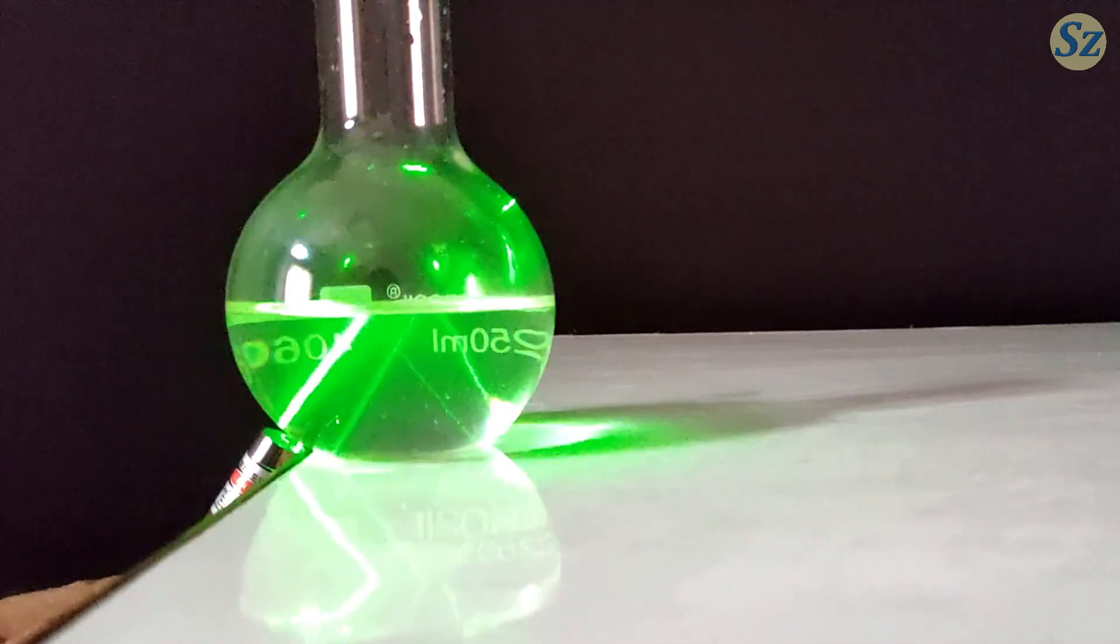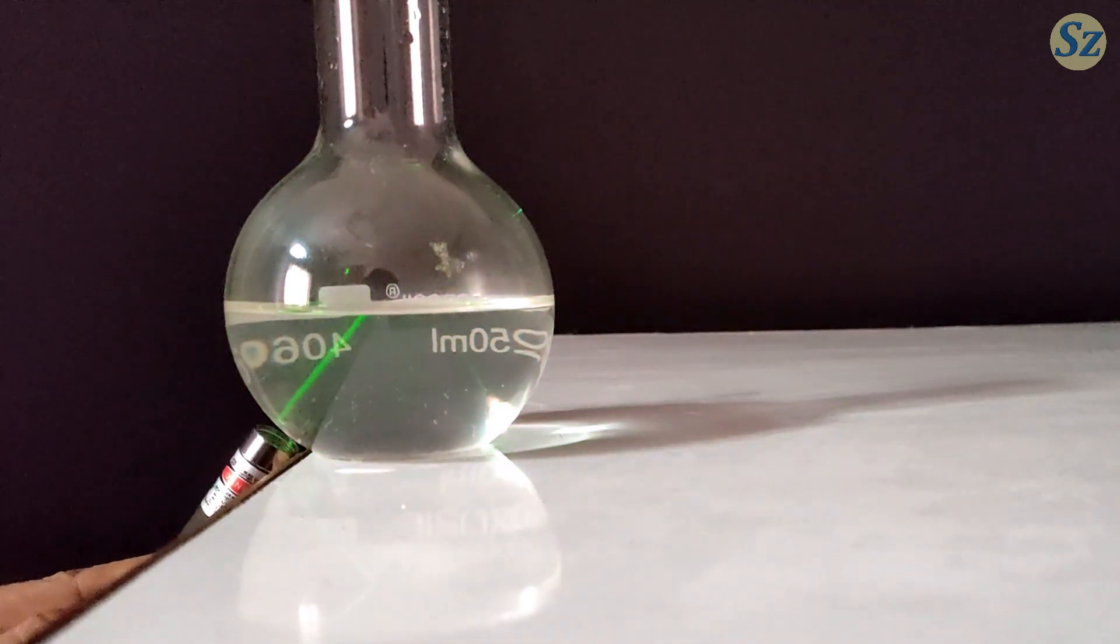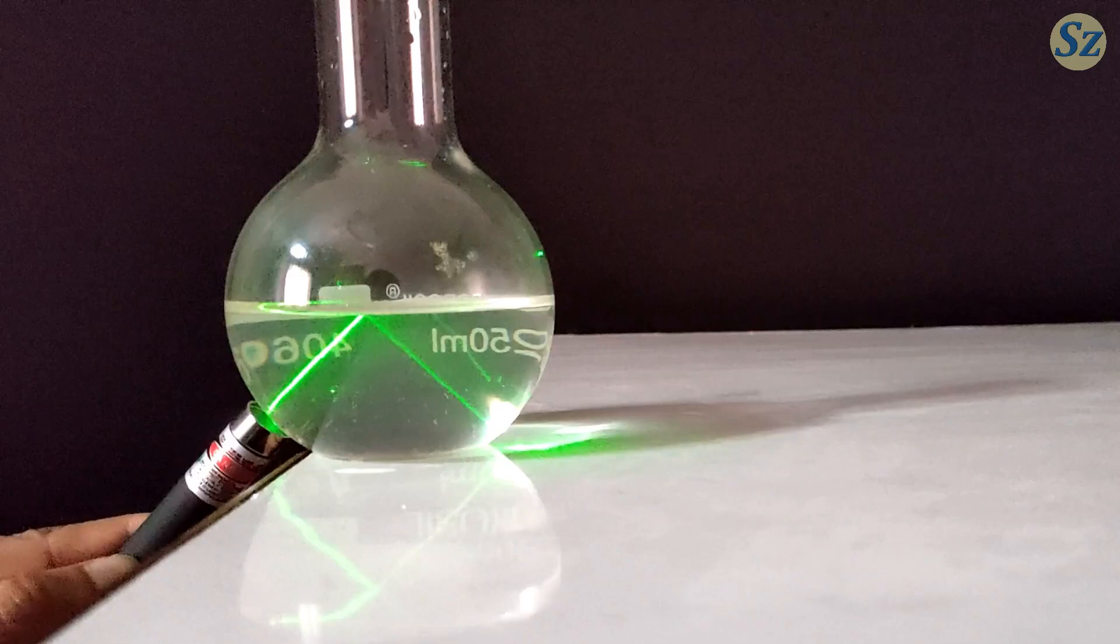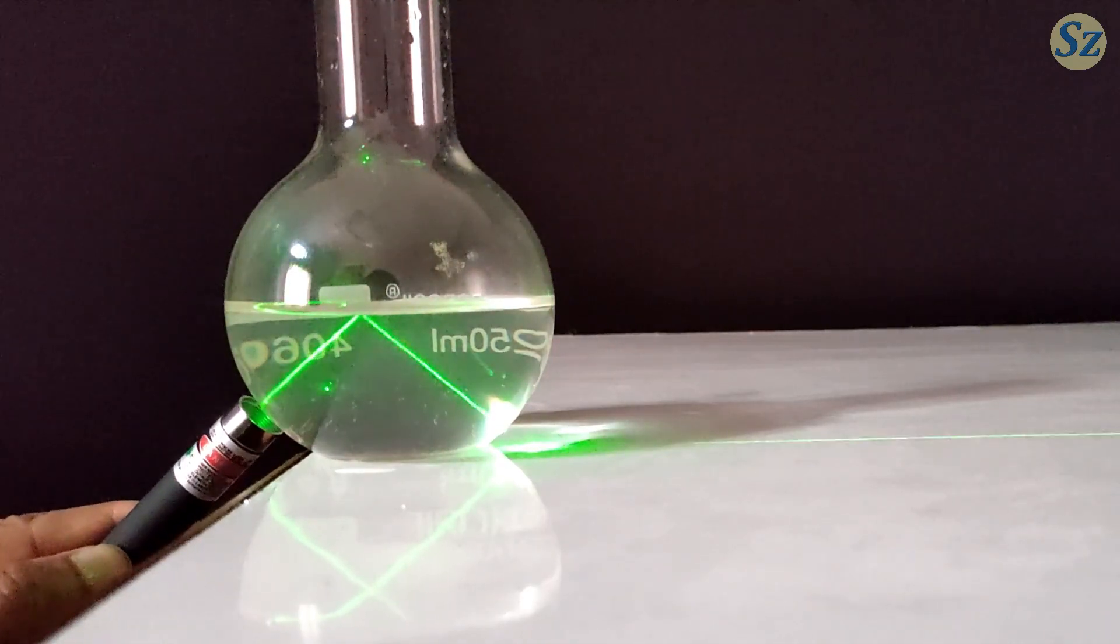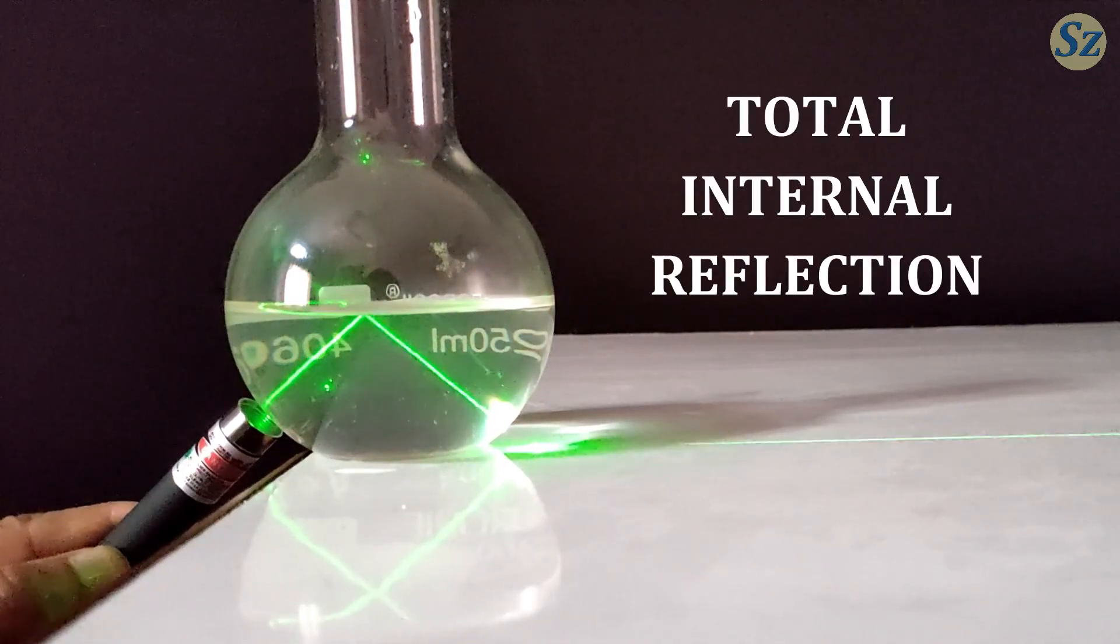And when light travels from an optically denser medium to an optically rarer medium, and the angle is beyond a certain limit, light is completely reflected back. This is called total internal reflection.